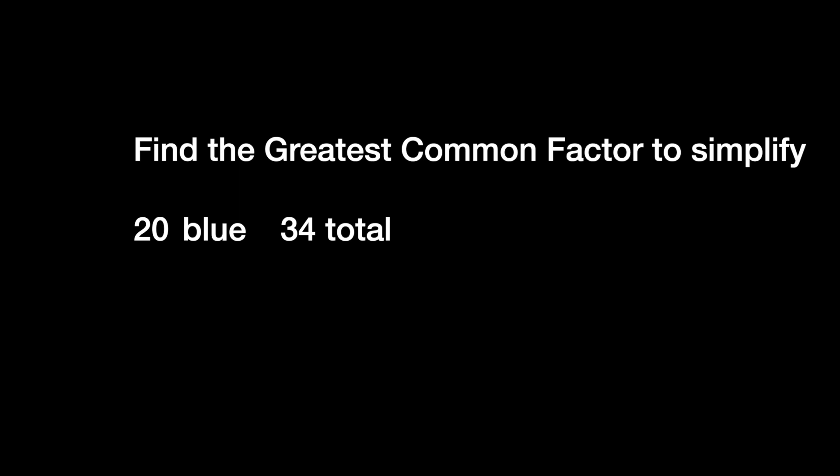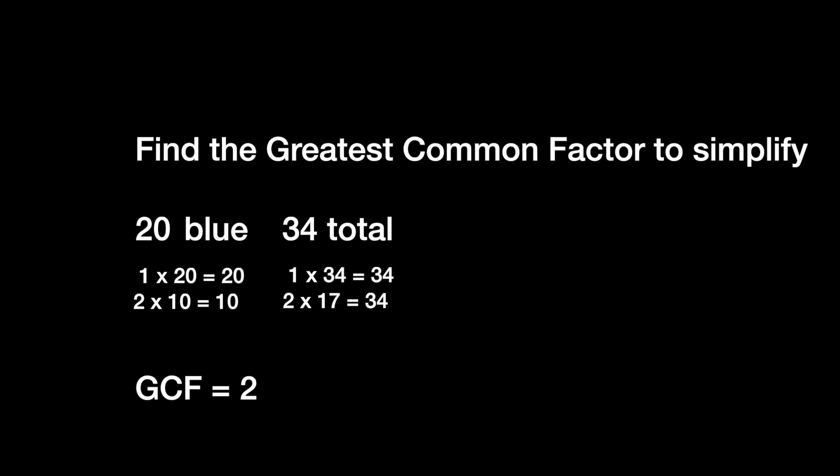Last time we figured out the factors of 20, we know that we have 1 and 20 and 2 and 10. Let's look at the number 34. There are two factors for 34: 1 and 34 and 17 and 2. We know that our greatest common factor is 2.